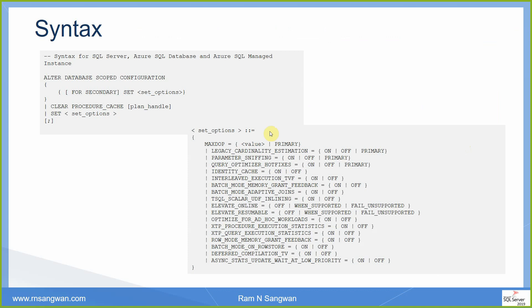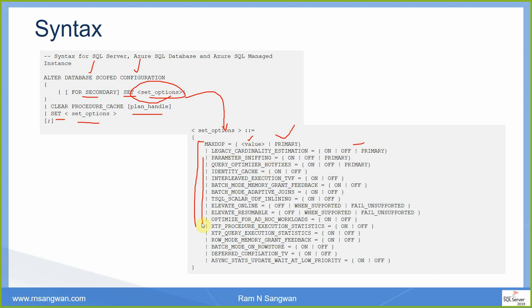The T-SQL syntax is: ALTER DATABASE SCOPED CONFIGURATION [FOR SECONDARY] SET set_options. Possible SET options include CLEAR PROCEDURE CACHE with plan_handle, MAXDOP with a value or PRIMARY, LEGACY_CARDINALITY_ESTIMATION ON or OFF, and many others. These options correspond directly to the checkboxes and true/false values in the dialog box.